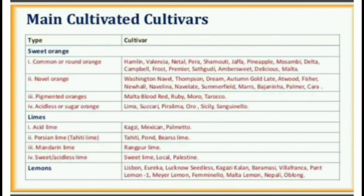Limes: Number one, acid lime cultivars include Kagzi, Mexican, and Palmetto. Number two, Persian lime cultivars include Tahiti lime, Pond, and Bears lime. Number three, mandarin lime includes Rangpur lime. Number four, sweet or acidless lime includes Sweet Lime Local and Palestine. Lemons: Lisbon, Eureka, Lucknow Seedless, Kagazi Kalan, Baramasi, Painted Lemon, Mere Lemon, Famine Yellow, Malta Lemon, Nepali Oblong.